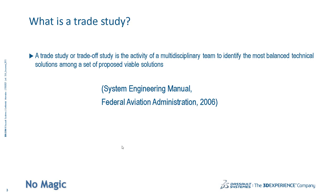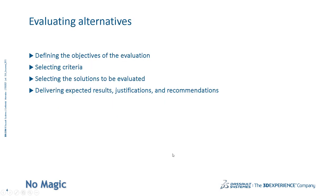That is what systems engineering and model-based systems engineering with the model-based approach is supposed to do, and that's what we show can be done automatically. The steps to evaluate alternatives are: define the objective of evaluation using MOEs and weights, select criteria using those MOEs, then select the solution to be evaluated — which could be based on generalization, other relations like associations, Excel variants, or instances in the model — and then deliver expected results, certification, and recommendations.